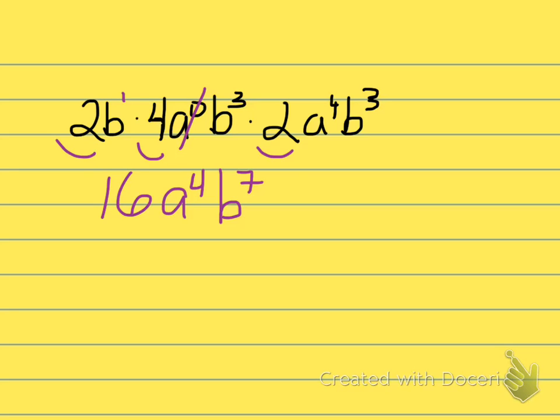A to the 4, because that A to the 0 might as well just not be there. So I have A to the 4, I like to go alphabetical. What about my B's? I have B to the 1, and B cubed, and B cubed. That's a total of? 7. B to the 7. B to the 7, and that's all I have. Is that the answer? Yes. That's the answer. 16, A to the 4, B to the 7.